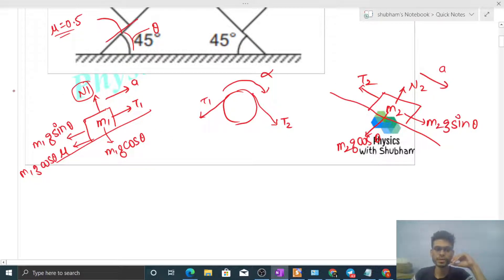Now if we talk about variables, again we have acceleration as a variable, alpha is a variable, and T1 and T2. Again 4 variables and we can easily write 4 equations, just as we wrote in the previous part.